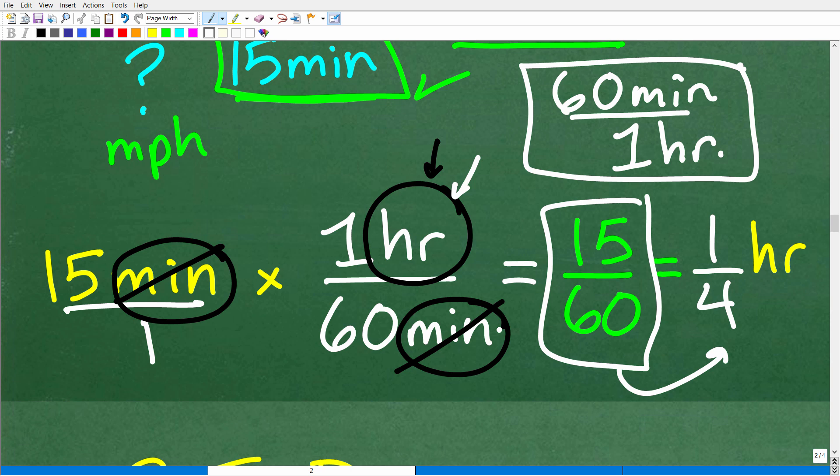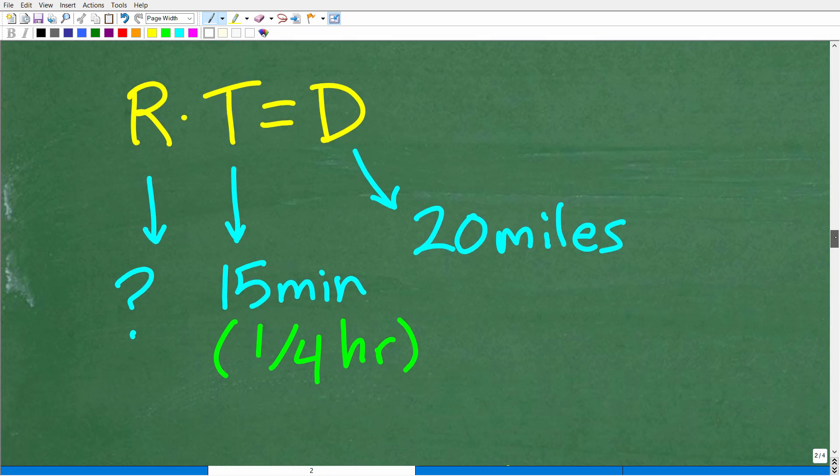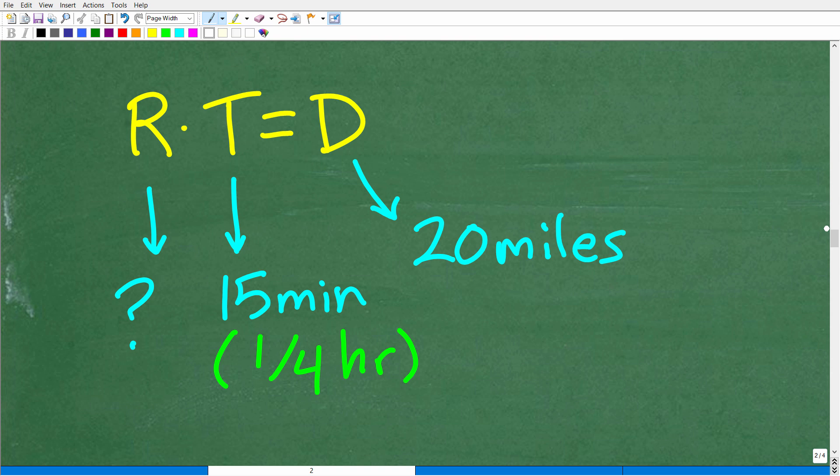So one fourth of an hour is 15 minutes. Now, most of you would be like, yes, I knew that. But when it comes to converting units of measure, oftentimes I see a lot of students that think they know how to do this better than they actually do. And again, this is a pretty simple problem and it's definitely a skill that you need to know. All right. So now that we have our time in hours, or converted to hours, we can put this all together.